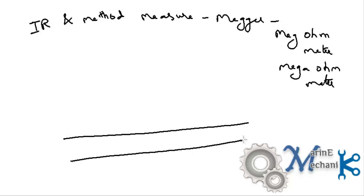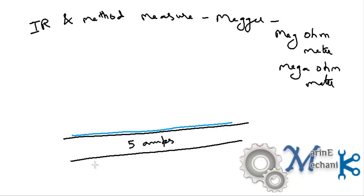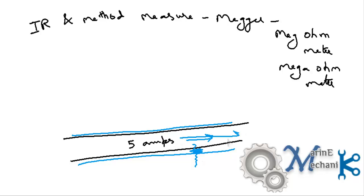Here is a wire or conductor. Let's say it's carrying 5 Amps and it's covered with an insulation shown in blue. The main function of this insulation is to withstand the 5 Amp current passing through the conductor and not allow any current to leak through its material — it should arrest the passage of current, keeping the current flowing only through the conductor.